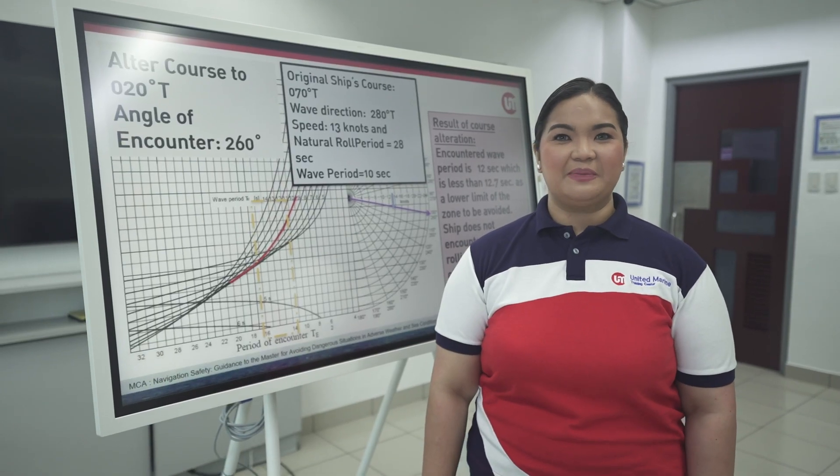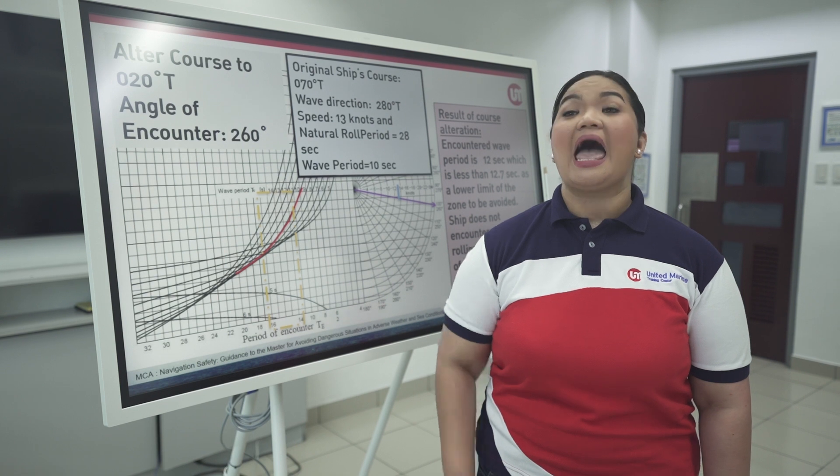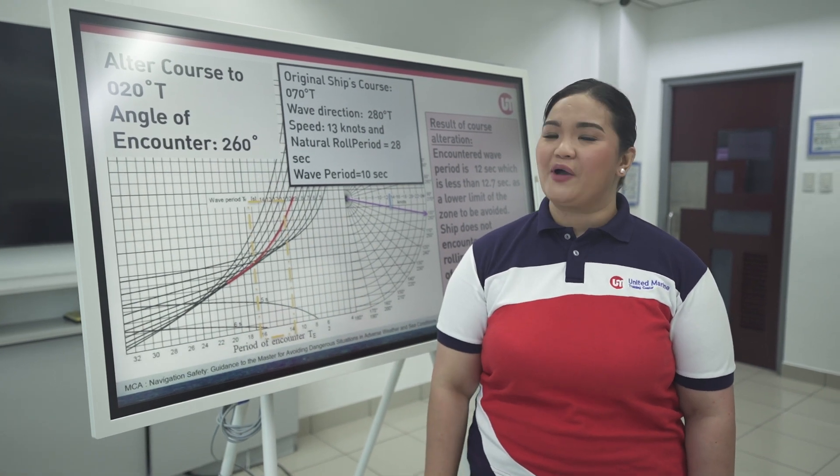That's how you determine if your ship is encountering parametric rolling and what are the countermeasures required to avoid it from happening using the MSC circular 1228 diagram.